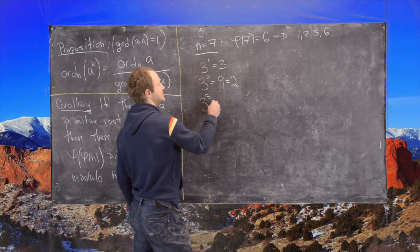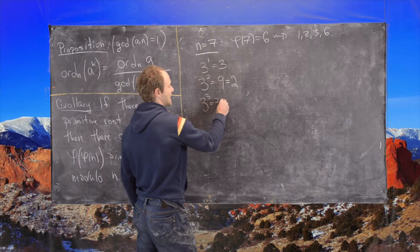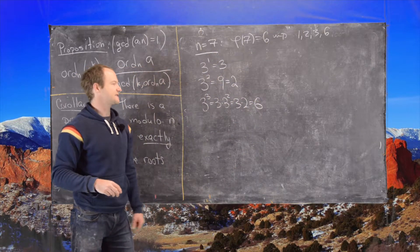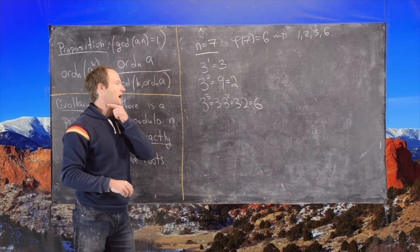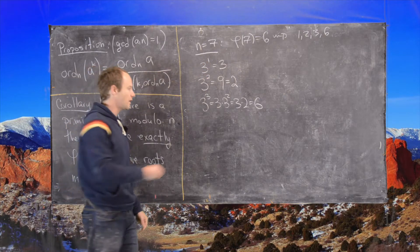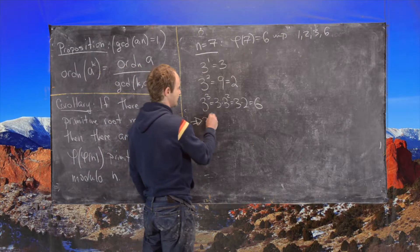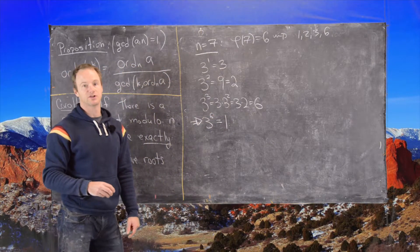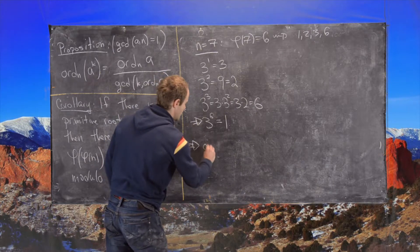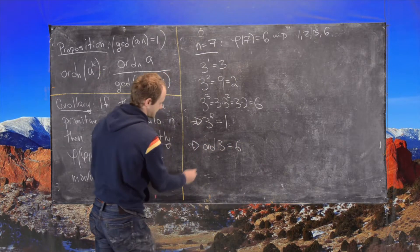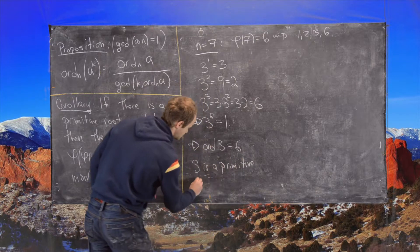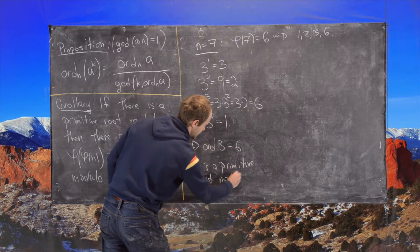We compute: 3¹ = 3, 3² = 9 ≡ 2, and 3³ = 3 × 3² = 3 × 2 = 6 ≡ −1 mod 7, which is not 1. So the order of 3 cannot be 1, 2, or 3. The order must be 6, and we know 3⁶ ≡ 1 mod 7 by Euler's generalization of Fermat's Little Theorem. Therefore, the order of 3 is 6, and 3 is a primitive root mod 7.